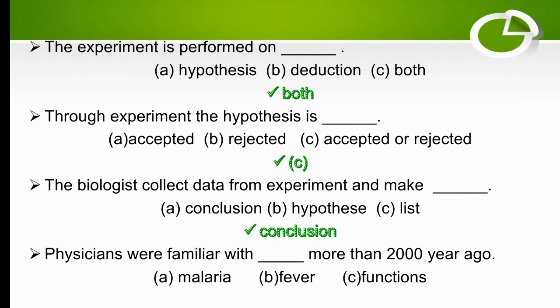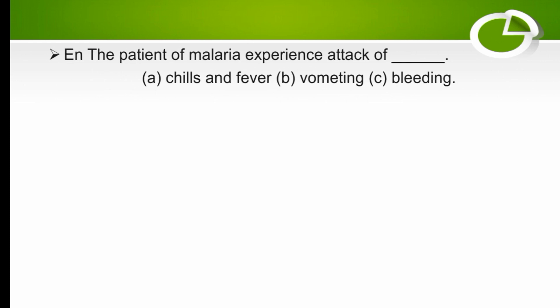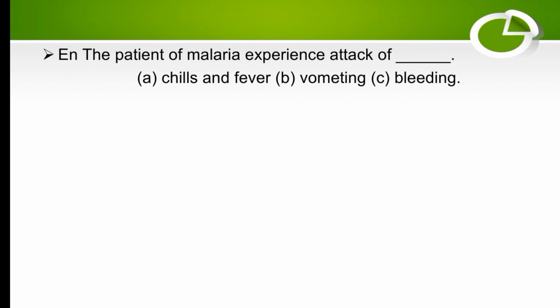Physicians were familiar with which disease more than 2000 years ago? The right option is malaria — they were familiar with malaria 2000 years ago. The patient of malaria experiences attacks of which? The options are chills and fever, vomiting, or bleeding. The right option is A — chills and fever.